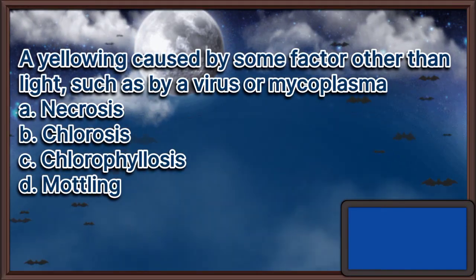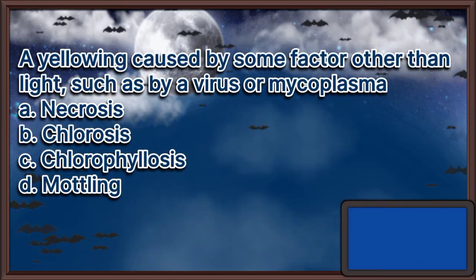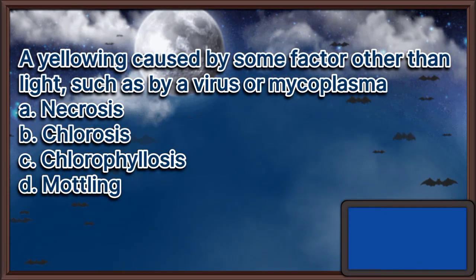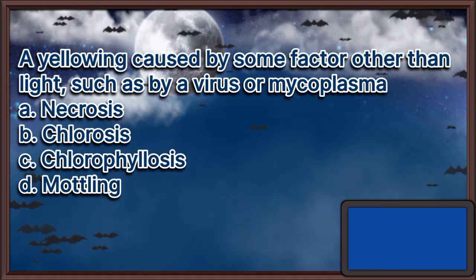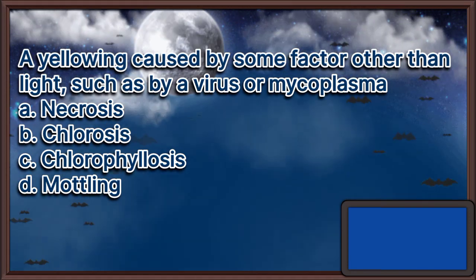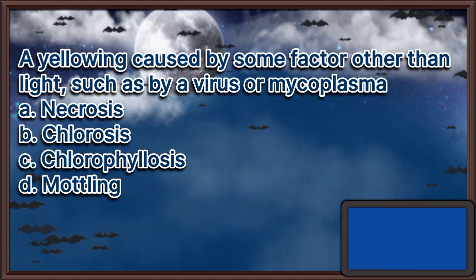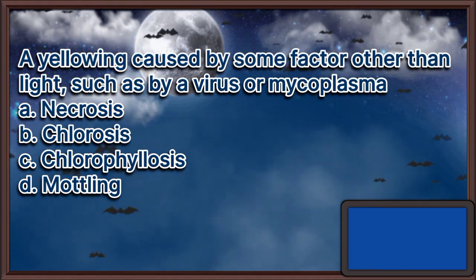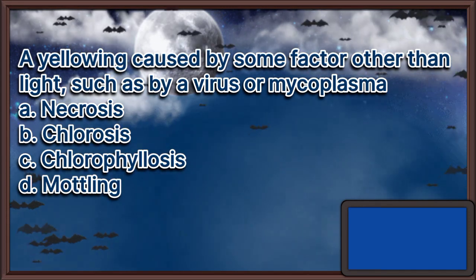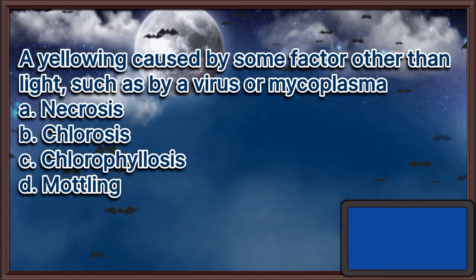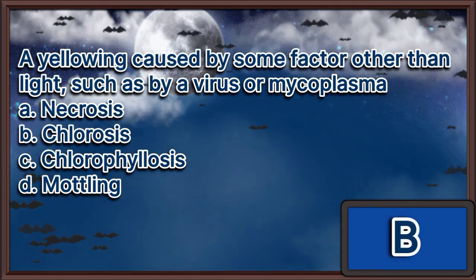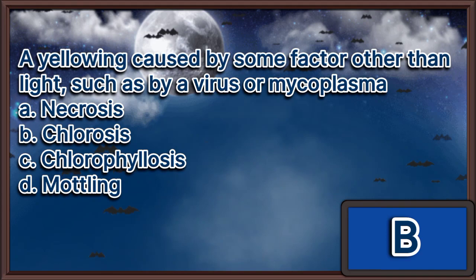A yellowing caused by some factor other than light, such as by a virus or mycoplasma. A. Necrosis. B. Chlorosis. C. Chlorophyllosis. D. Mottling. The answer is letter B.